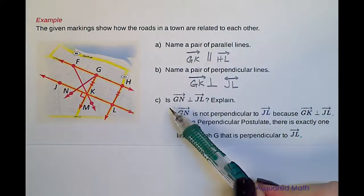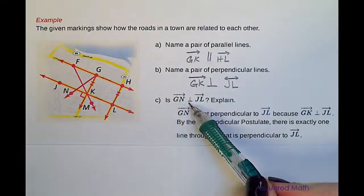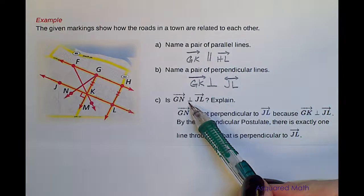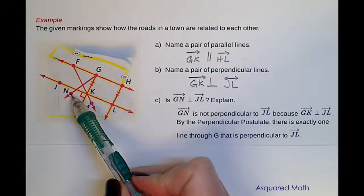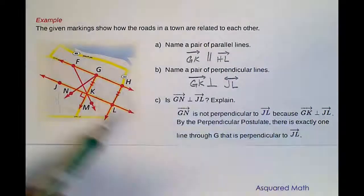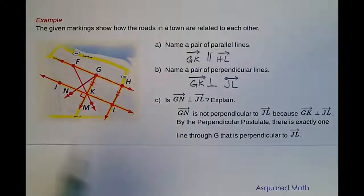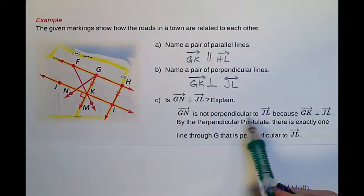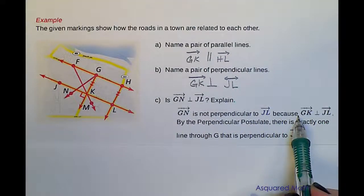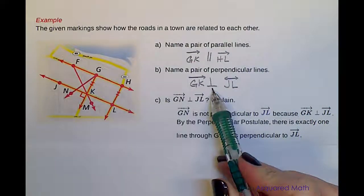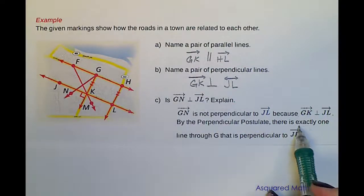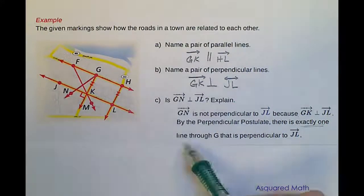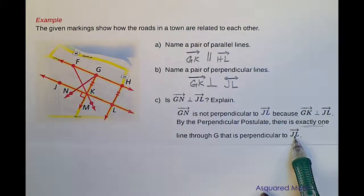Part C asks: is ray GN perpendicular to JL? Ray GN is not perpendicular to JL because GK is already perpendicular to JL, and by the perpendicular postulate, there is exactly one and only one line through G that is perpendicular to JL.